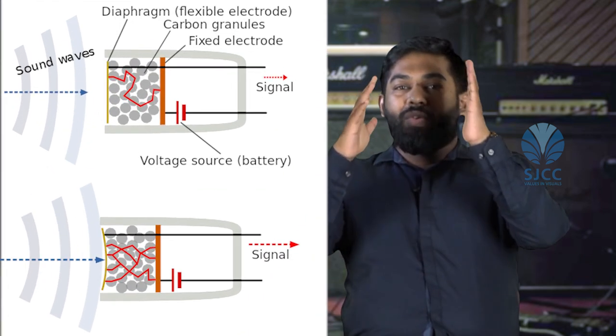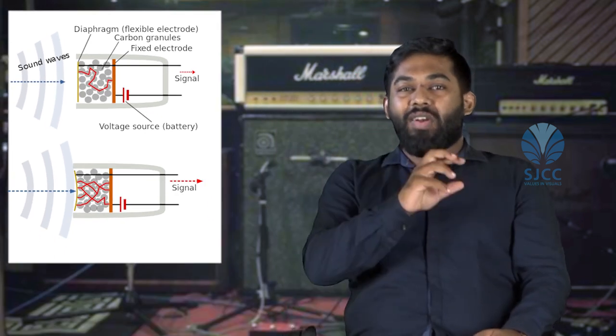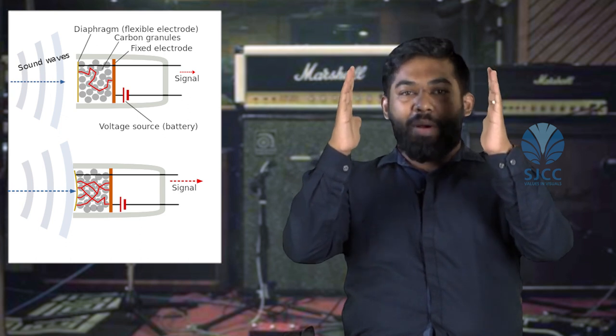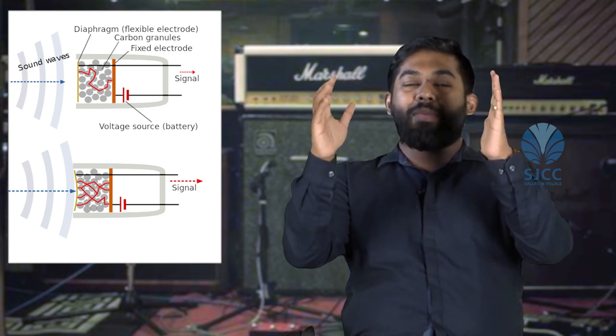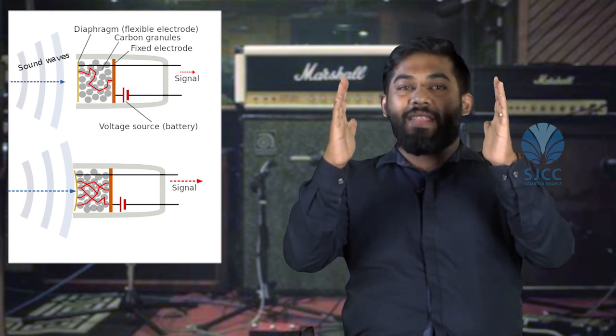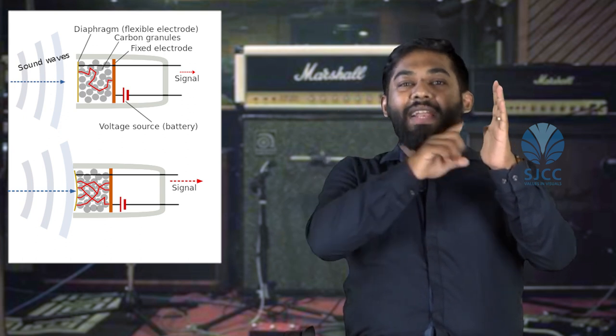Carbon particle microphones are made up of two metal plates separated by carbon granules. Carbon is a resistor and does not allow the passage of electricity between the plates. In the stationary condition, the two plates are given a power supply, but power does not pass from one plate to the other because of the carbon particles in between. When acoustical energy or air vibration hits the plates, they vibrate, and the carbon particles also vibrate, changing the electrical resistance between the two plates and causing some electricity to pass from plate one to plate two — that is how we get our audio signal. Here are a few examples of carbon microphones.